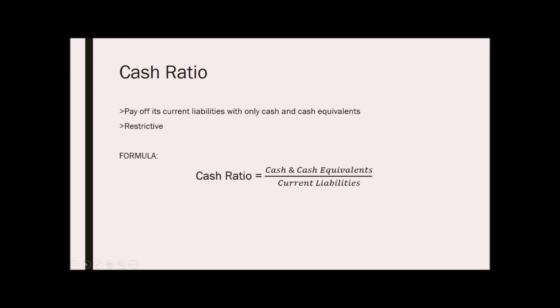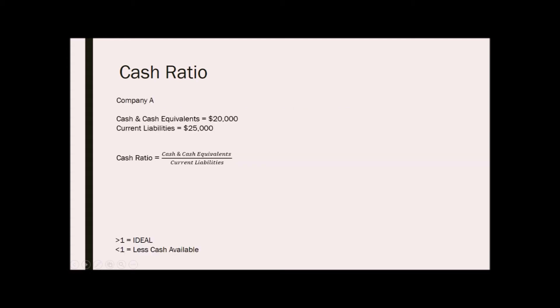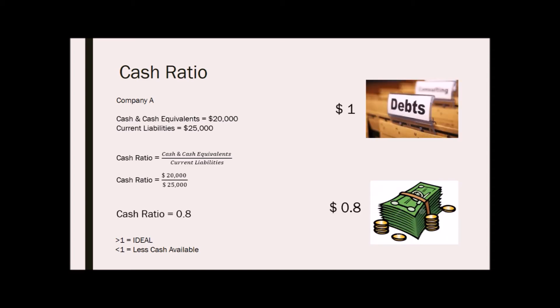The formula would then be cash and cash equivalents over current liabilities. For example, company A has cash and cash equivalents worth $20,000, current liabilities of $25,000. To get the cash ratio, we divide $20,000 by $25,000 and we will get a cash ratio of 0.8. This means that for every $1 current liabilities, company A can only pay $0.8 for its cash and cash equivalents.